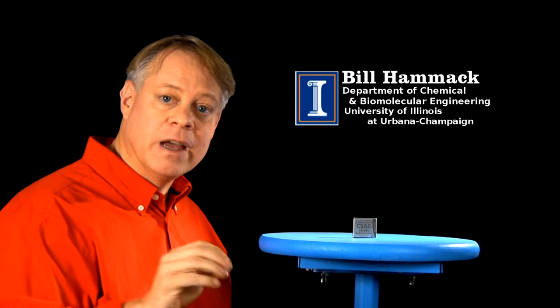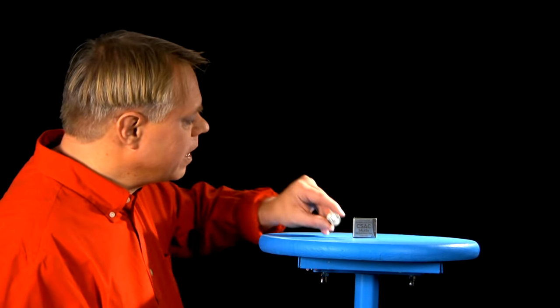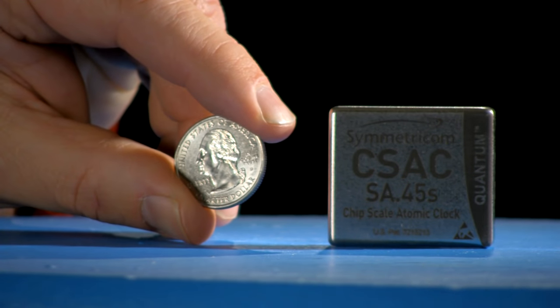I want to show you the most amazing thing. The world's first commercially available chip-scale atomic clock, Symmetricon C-SAC. That's right, this tiny device, about the size of a quarter, is an atomic clock.